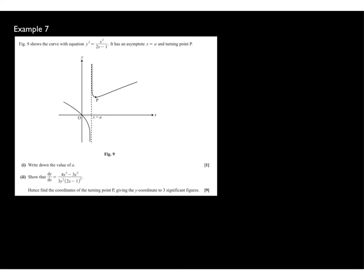Example 7. A curve defined implicitly has an asymptote at x equals a and a minimum turning point at P. Write down the value of a. Vertical asymptotes occur when the denominator equals zero: 2x minus 1 equals 0, so x equals one half. Therefore a equals one half, and the vertical asymptote has equation x equals one half.